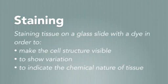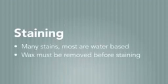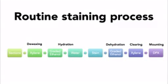Staining refers to the process of staining tissue on a glass slide with a dye in order to make the cell structure visible, to show variation in these structures, and to indicate the chemical nature of the tissue elements. There are many different staining methods that can be used. However, most stains are water-based and at this stage the tissue is embedded in wax. To remove the wax, xylene is used in a process known as de-waxing. Because water and xylene are immiscible, ethanol is used to remove the xylene and the slide can now be taken to water — a process known as hydration. Now the slide is ready to be stained.